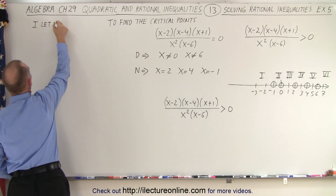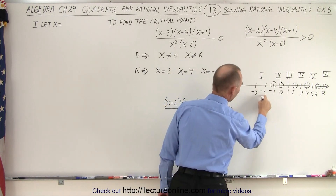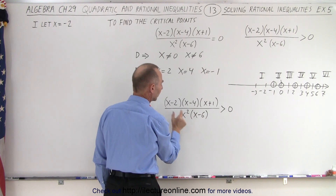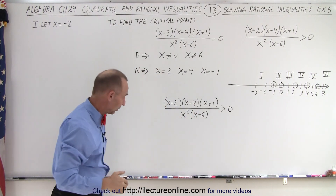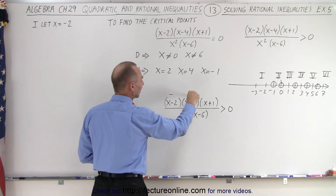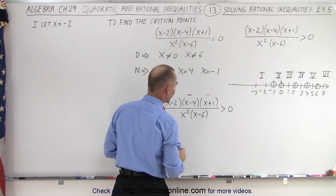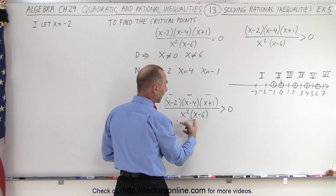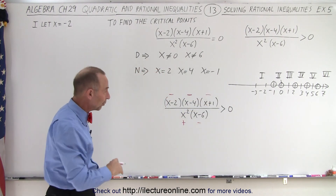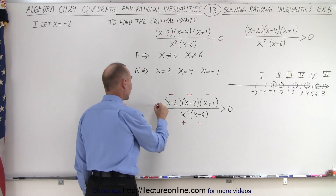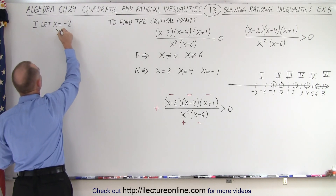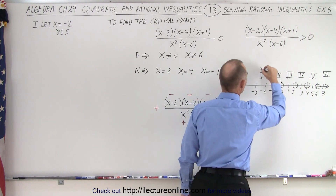For region one, we let x equal negative two. We check each binomial to determine if it's positive or negative. Negative two minus two is negative four — negative. Negative two minus four is negative six — negative. Negative two plus one is still negative. Negative two squared gives a positive value. And negative two minus six is negative eight — negative. That's four negatives, an even number. An even number of negatives makes the whole fraction positive, which means it is greater than zero. Therefore region number one satisfies the inequality — yes.